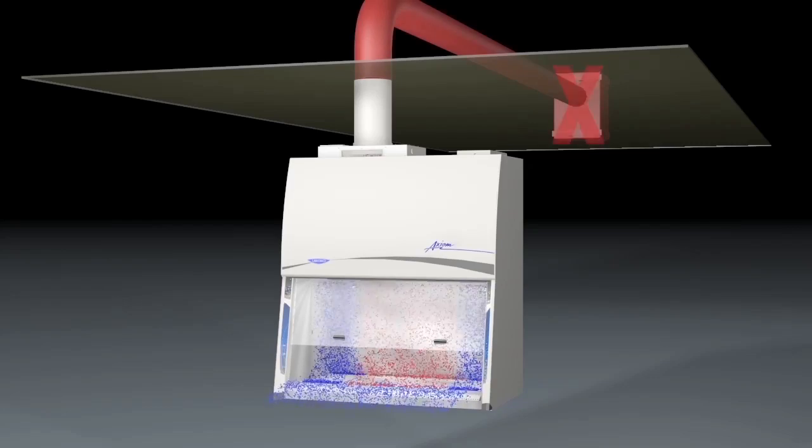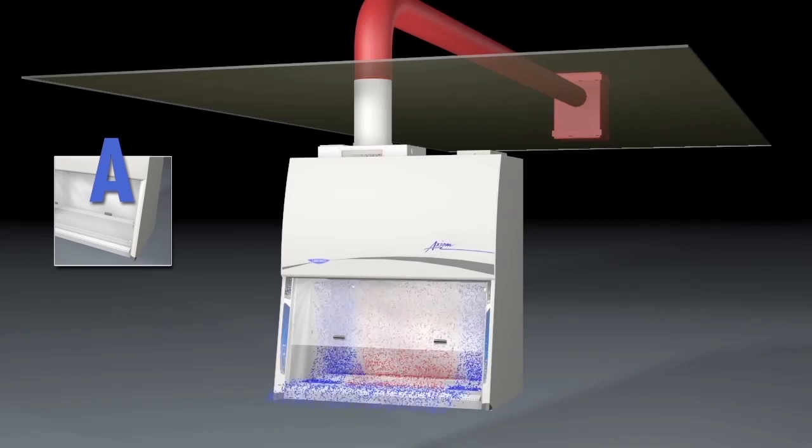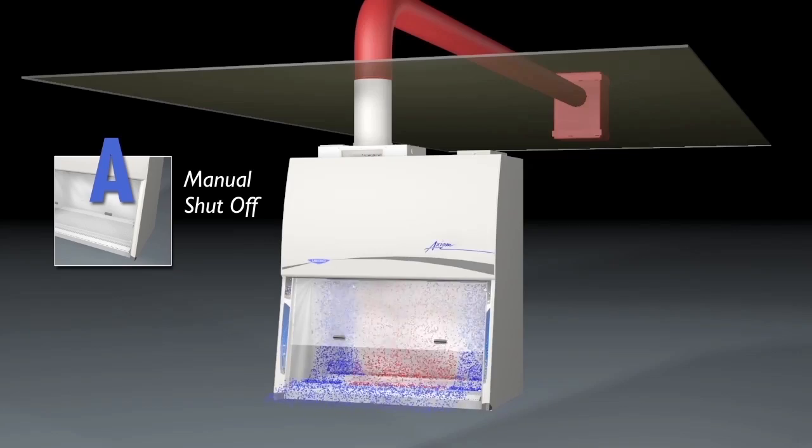During exhaust failure, all Type A cabinets pressurize their canopy and exhaust ductwork until manually shut off or restarted.